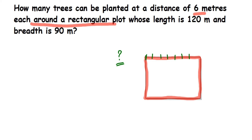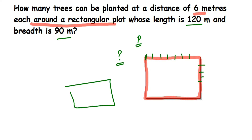What we're going to do is solve this by first finding the perimeter. We know the length and we know the breadth, so we're going to find the perimeter first. After finding the perimeter, since we need to know how many plants are to be planted at a distance of 6 meters, we're going to divide the whole perimeter by 6 to get the number of plants.